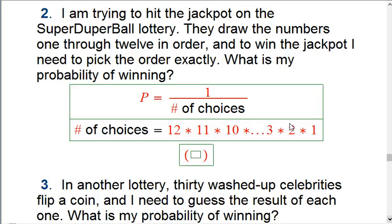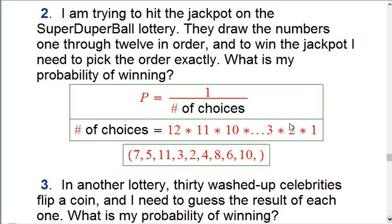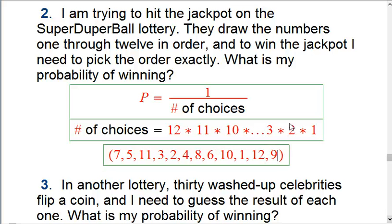So let's say they picked 7 first, and then 5, and then 11, and then 3, and then 2, and then 4, and then 8, and then 6, and then 10, and then 1, and then 12, and then 9. So there's a particular way they could have come out.